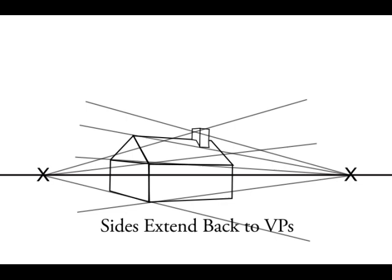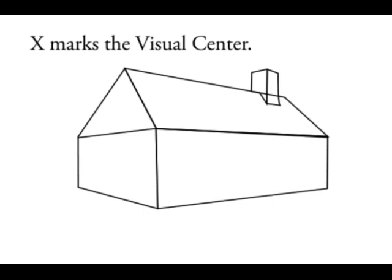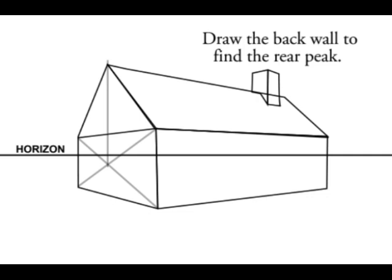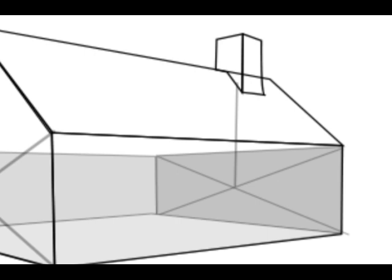Much better, but the roof is a bit wonky. Draw an X to find the visual center. Straight-up gives you the front peak of the roof. Do the same thing to find the rear peak. You need to draw the inside, the parts you can't see.